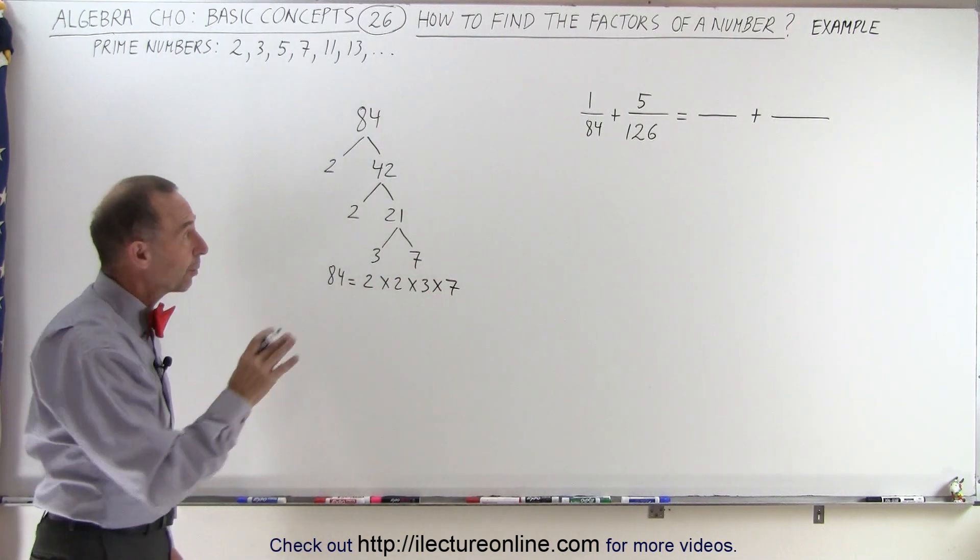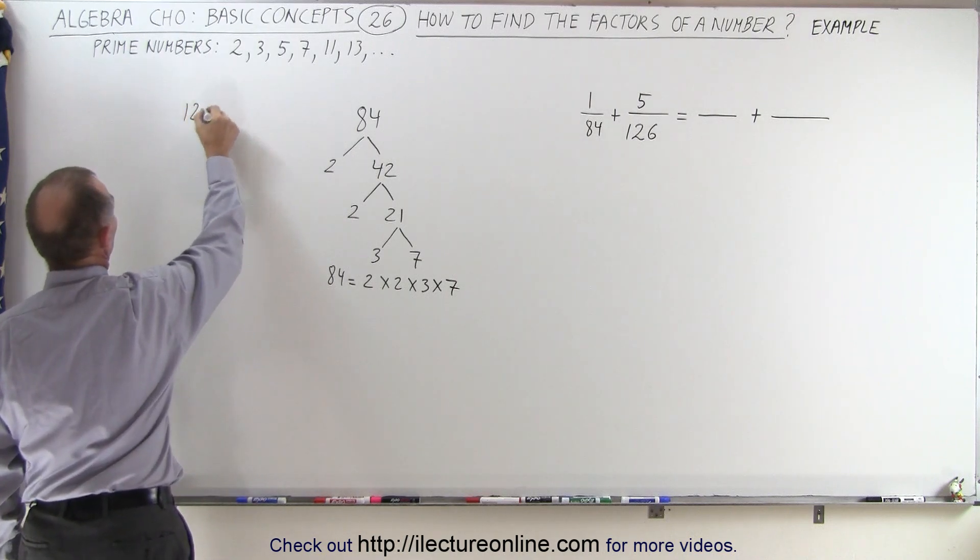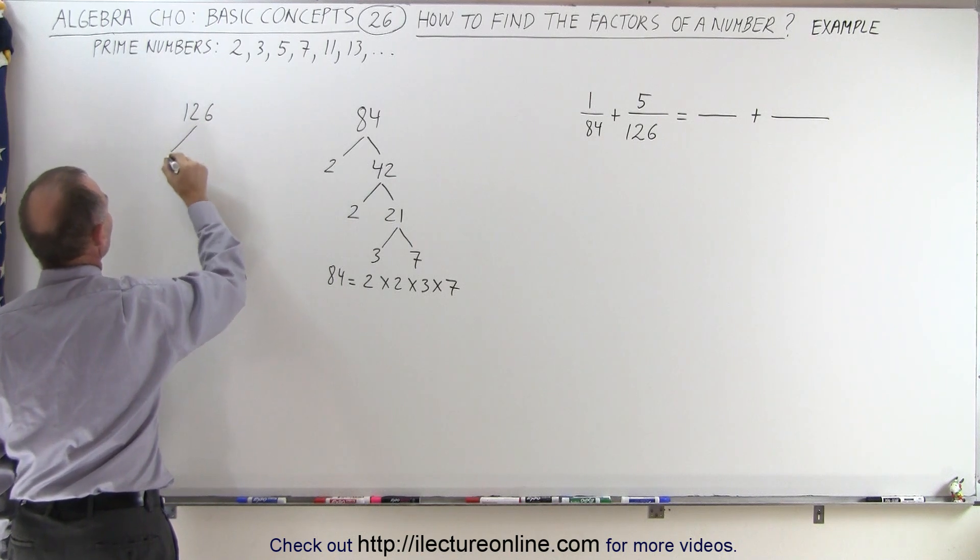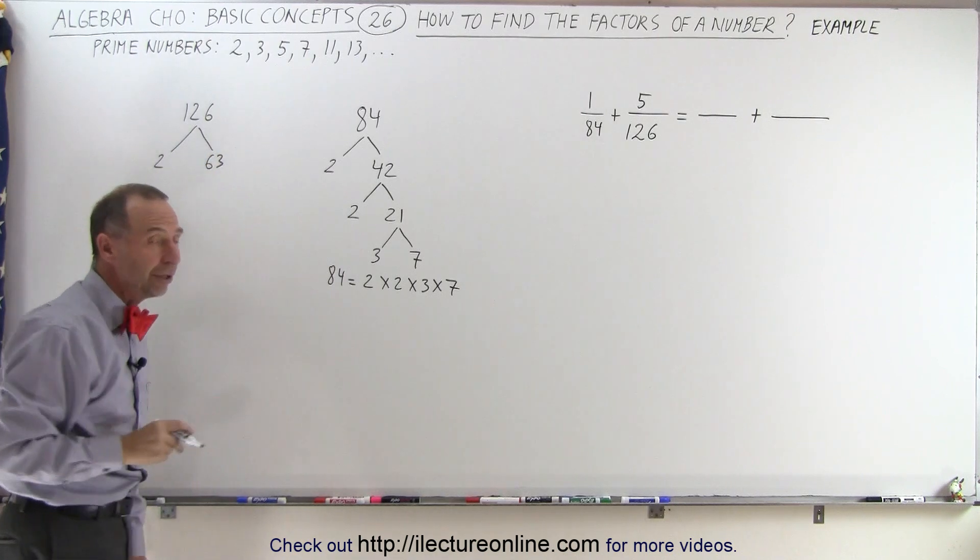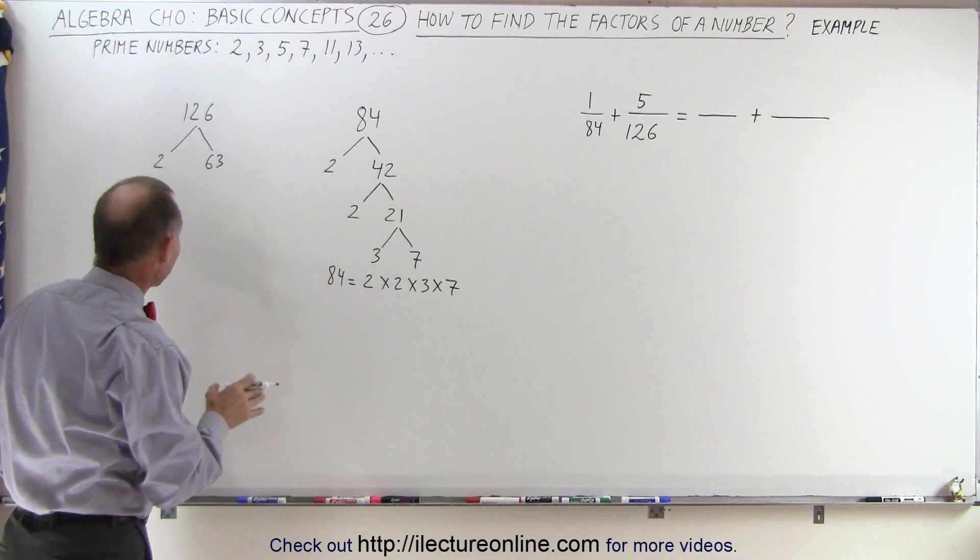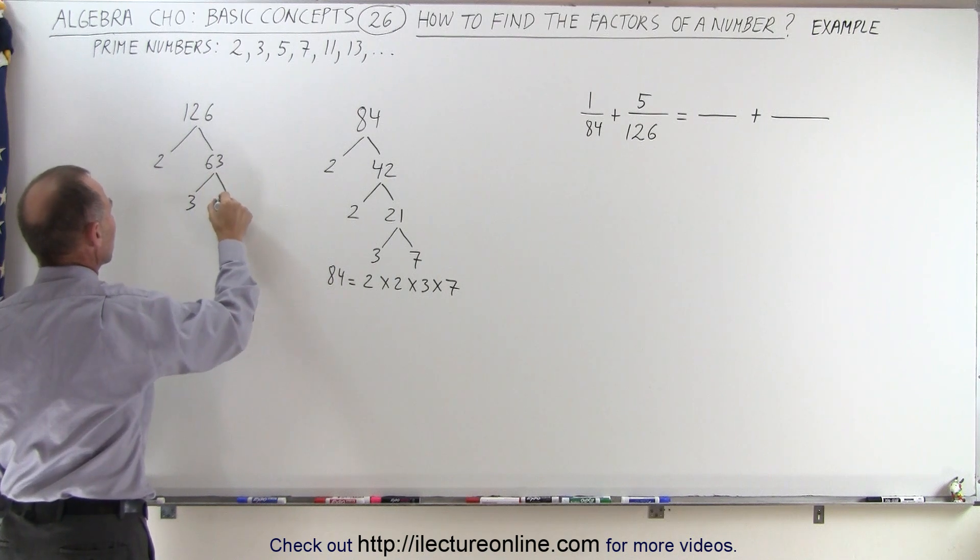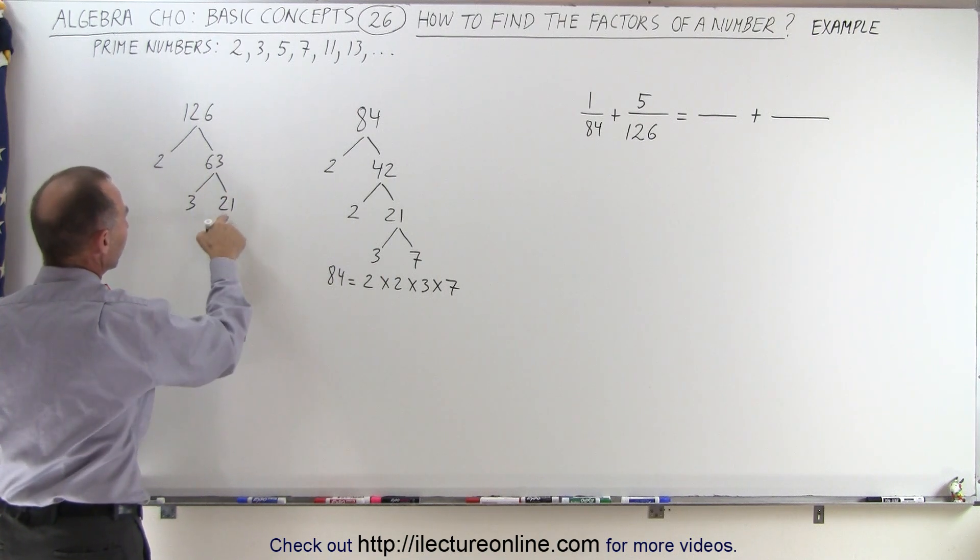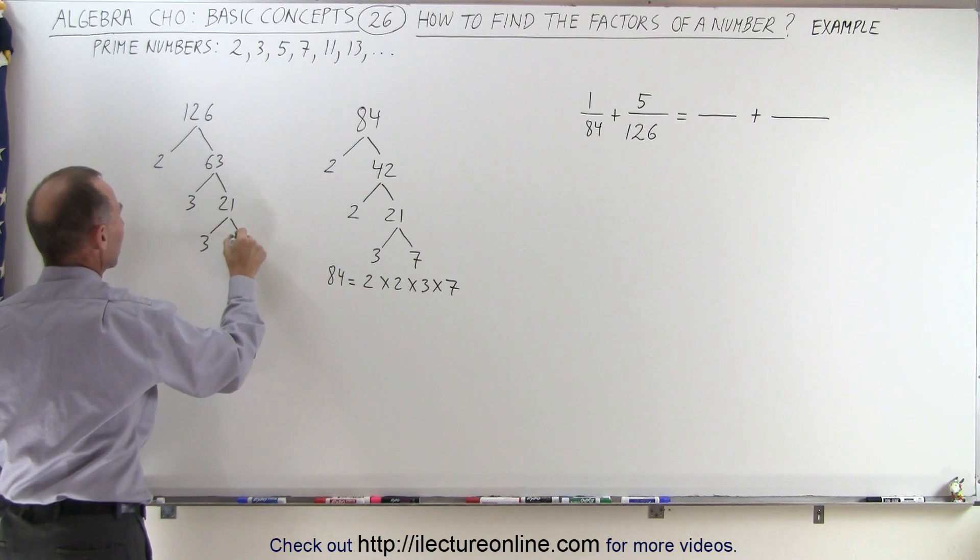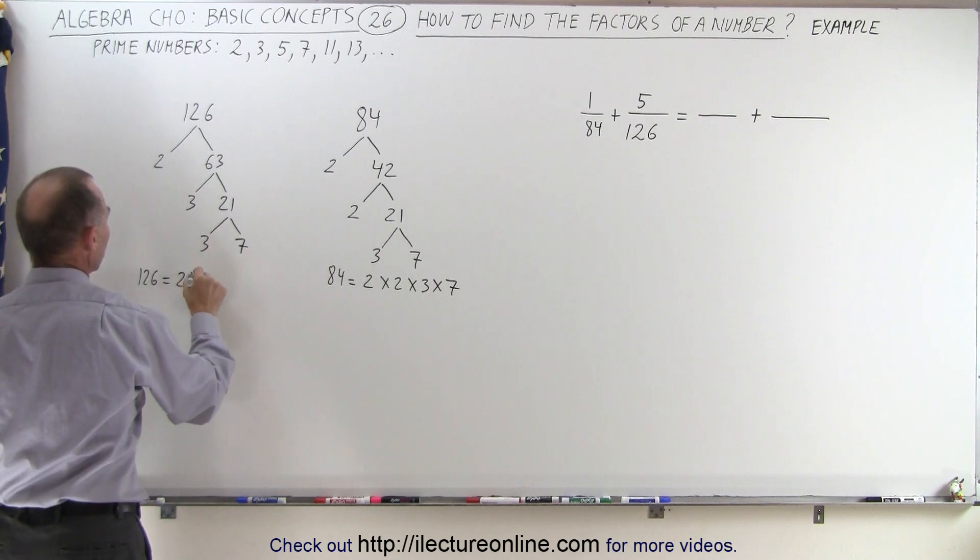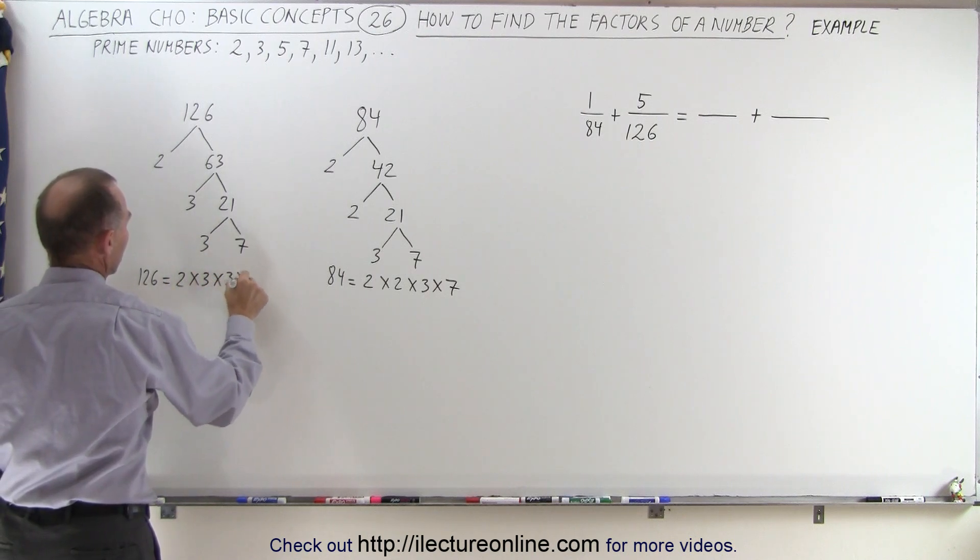Now do the same for 126. It's even, so divide by 2 to get 63, which is no longer even. Divide by 3 because adding the two digits gives 9, so 63 is divisible by 3. 3 goes into 63 21 times, still divisible by 3. Divide by 3 to get 7. So 126 equals 2×3×3×7.